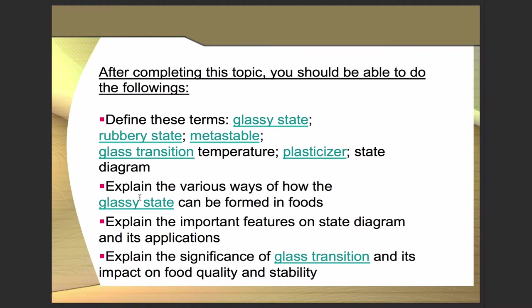Also, to explain the various ways of how the glassy state can be formed in foods, explain the important features on a state diagram and its applications, and explain the significance of glass transition and its impact on food quality and stability.